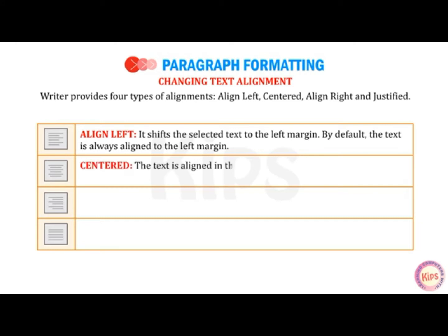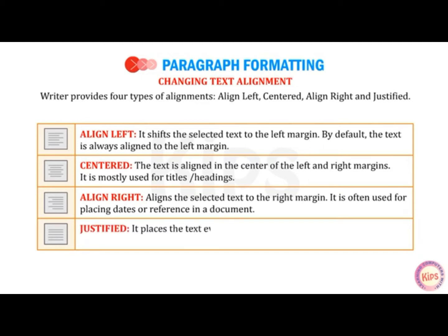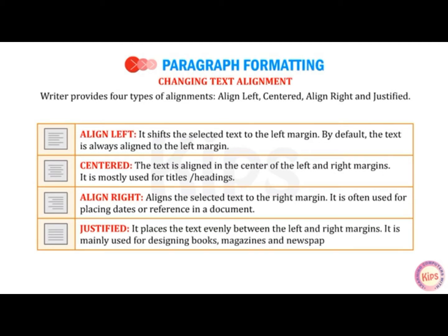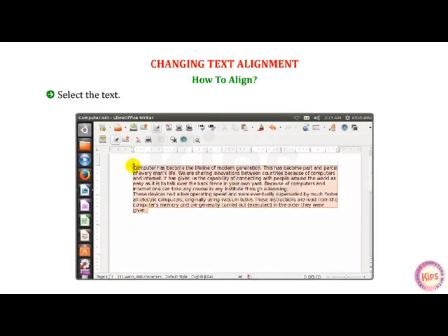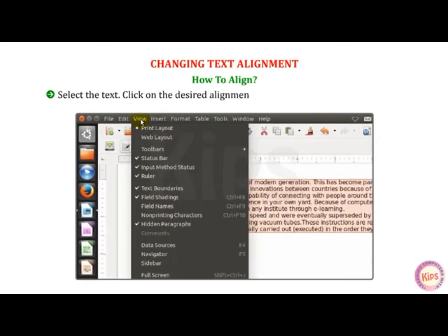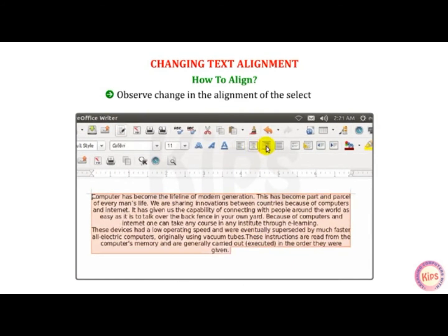Centered aligns the text in the center of the left and right margins and is mostly used for titles or headings. Align Right aligns the selected text to the right margin and is often used for placing dates or references. Justify places the text evenly between the left and right margins and is mainly used for designing books, magazines, and newspapers. To align text, select the text and click on the desired alignment button in the Formatting toolbar, then observe the change.